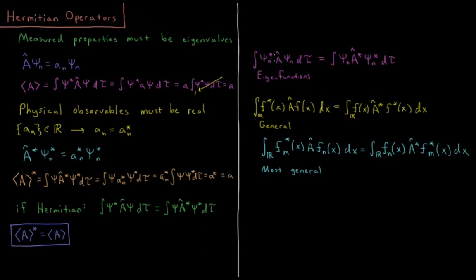So as I mentioned, for eigenfunctions of a given operator, we have the integral of psi n star A psi n overall space equals the integral of psi n A star psi star n. That's true for eigenfunctions. This is also more true for Hermitian operators for a general function. Integral f star of x A f of x with respect to x is equal to the integral from minus infinity to infinity. Again, f of x A star times f star of x. So it's true for any function of x even if it's not an eigenfunction of the operator A.